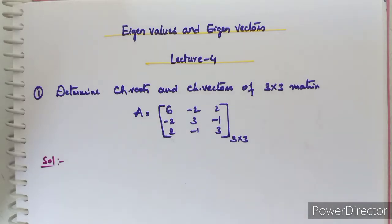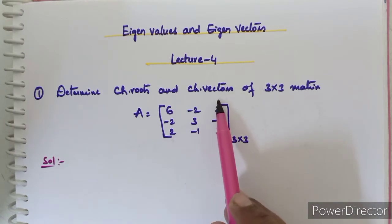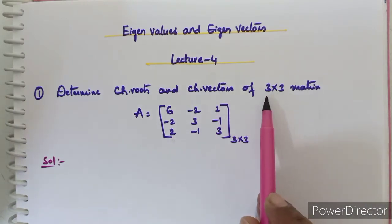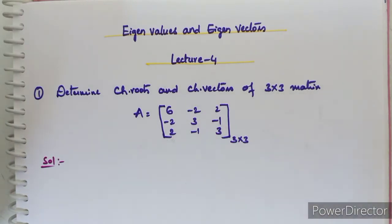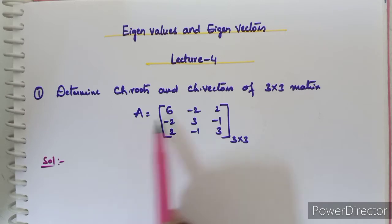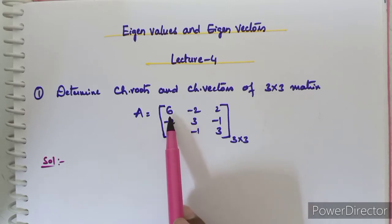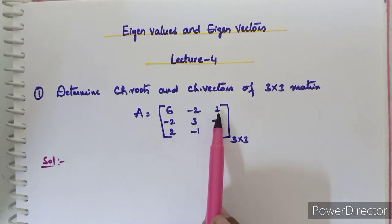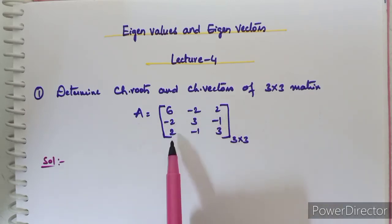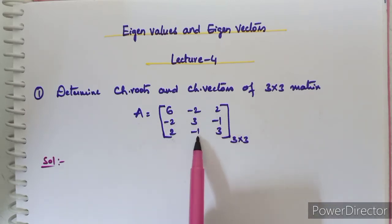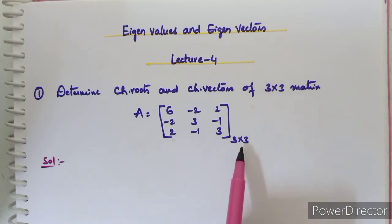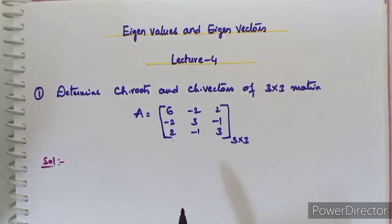Hello students, welcome to Abhi online classes. Today we will discuss how to find characteristic roots and characteristic vectors of a 3×3 matrix. The given 3×3 matrix A equals 6 -2 2 / -2 3 -1 / 2 -1 3.